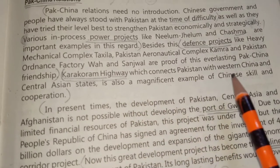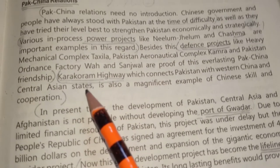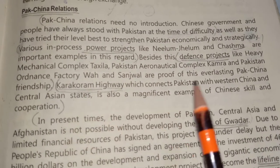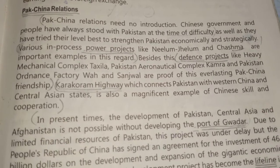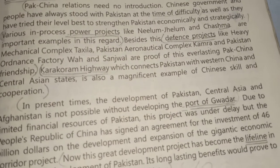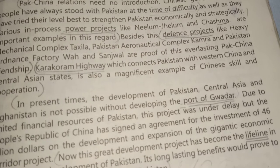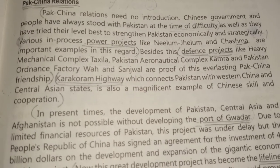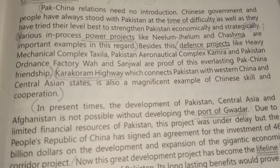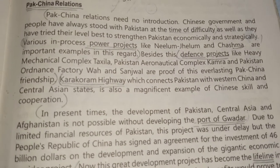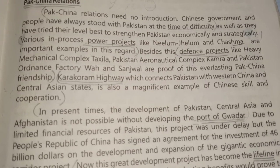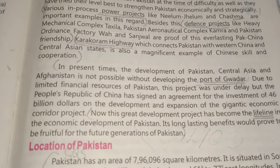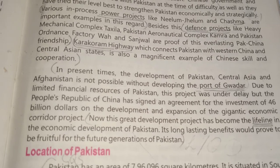The Karakoram Highway, which connects Pakistan with Western China and Central Asia, is also a magnificent example of Chinese skills and cooperation. Central Asia includes countries like Kazakhstan, Kyrgyzstan, Tajikistan, Turkmenistan, and Uzbekistan. The Karakoram Highway basically connects Pakistan, Western China, and all Central Asian countries. This is a very good example of partnership and cooperation. We have also seen the Port of Gwadar.